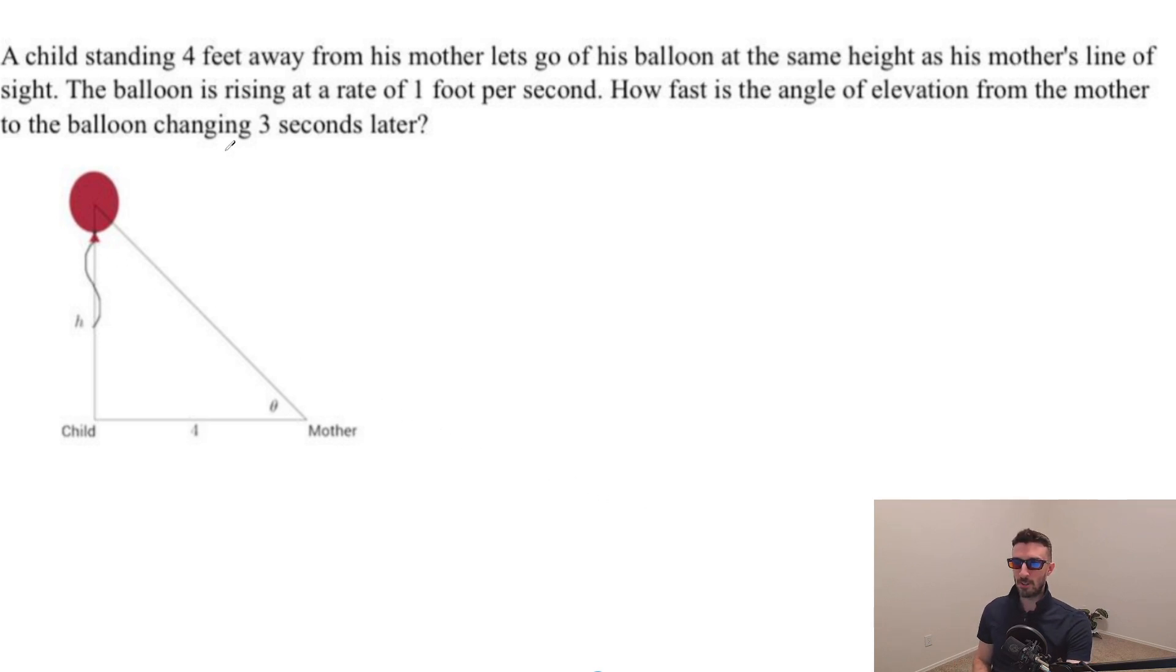If you like related rates, you're going to love this child and his mother's story. It turns out the child is standing four feet away from his mother, and he lets go of his balloon at the same height as his mother's line of sight.